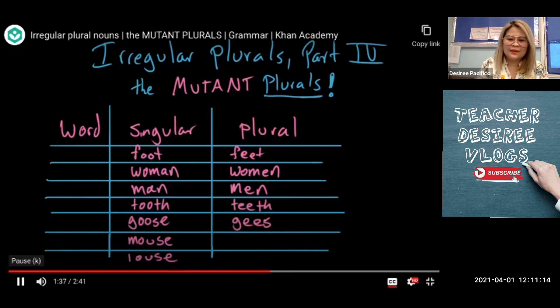As you can see, guys, you have here foot, tooth, goose — which all have long O sounds. How we change them to plural: we just change the two O's to two E's. So from foot to feet, from tooth to teeth, from goose to geese.